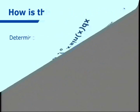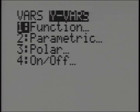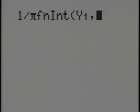We can go to our calculator and type in 1 divided by pi times the integral of our y1 comma x comma 0 comma with a pi.